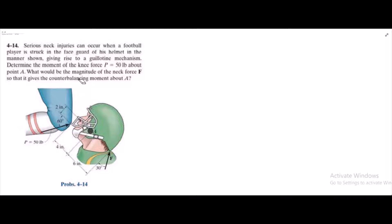According to this problem, we have given a situation in which the pillion gets hit by the force of 50 lb which is P, and the next force generated is F. We have to determine the magnitude of this force F. We have also given the condition that force F is producing the counterbalancing moment about A.